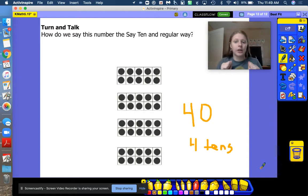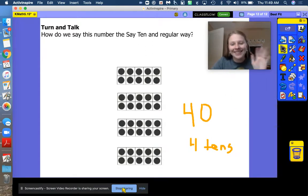We can also flash forty with our hands, okay? We know that we have ten fingers, so we're going to go like this. Ten, twenty, thirty, forty. You just flashed me forty with your fingers. Well done. Thanks for joining me, friends.